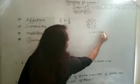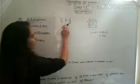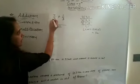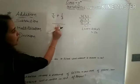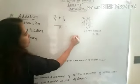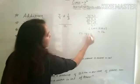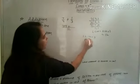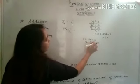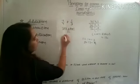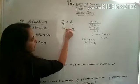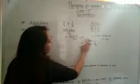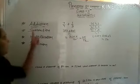The LCM is 2 into 2 into 3 = 12. To add fractions, first we take the LCM, then divide the LCM by each denominator and multiply with the respective numerator. The answer is: 7 times 3 is 21, and 1 times 4 is 4, giving us 25 by 12. This is the simple method for adding fractions.